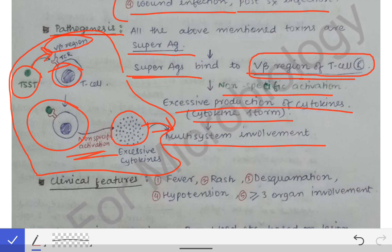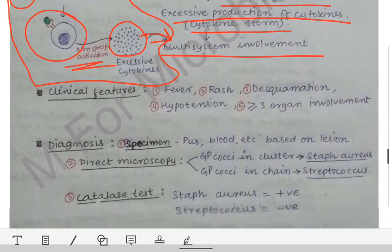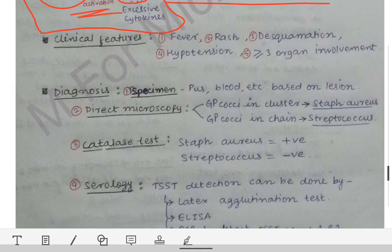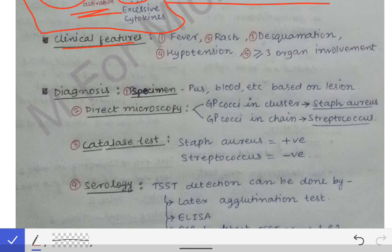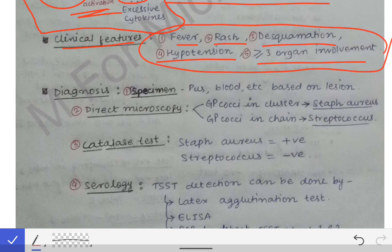What are the clinical features of toxic shock syndrome? There are five most important features that lead to the clinical diagnosis of TSS: fever, rash, desquamation of skin, hypotension, and involvement of more than three organs. If all five features are present, it is very likely to be a case of toxic shock syndrome.